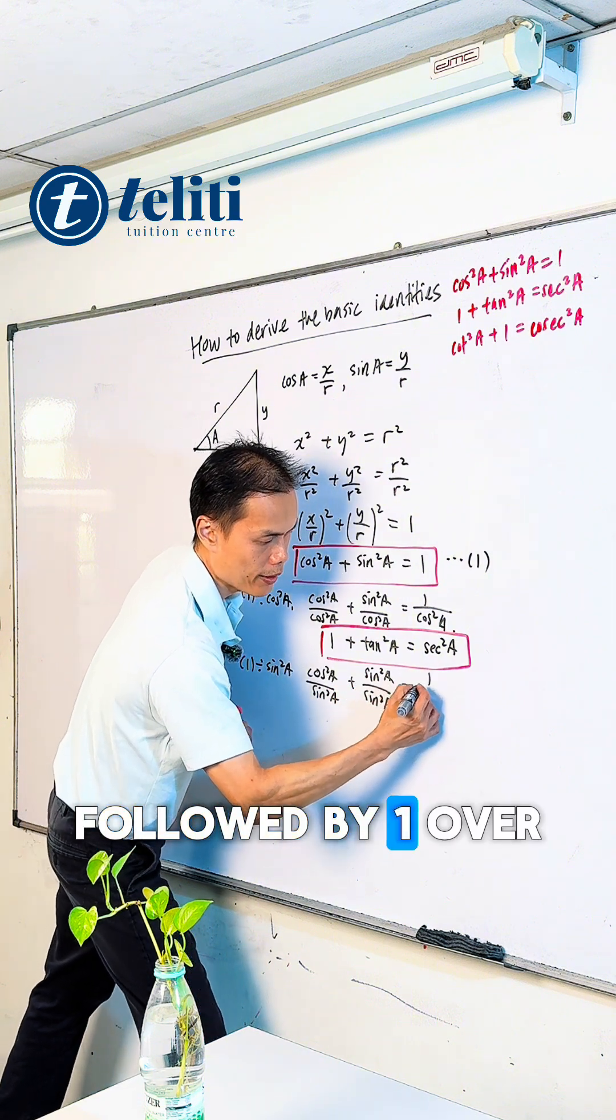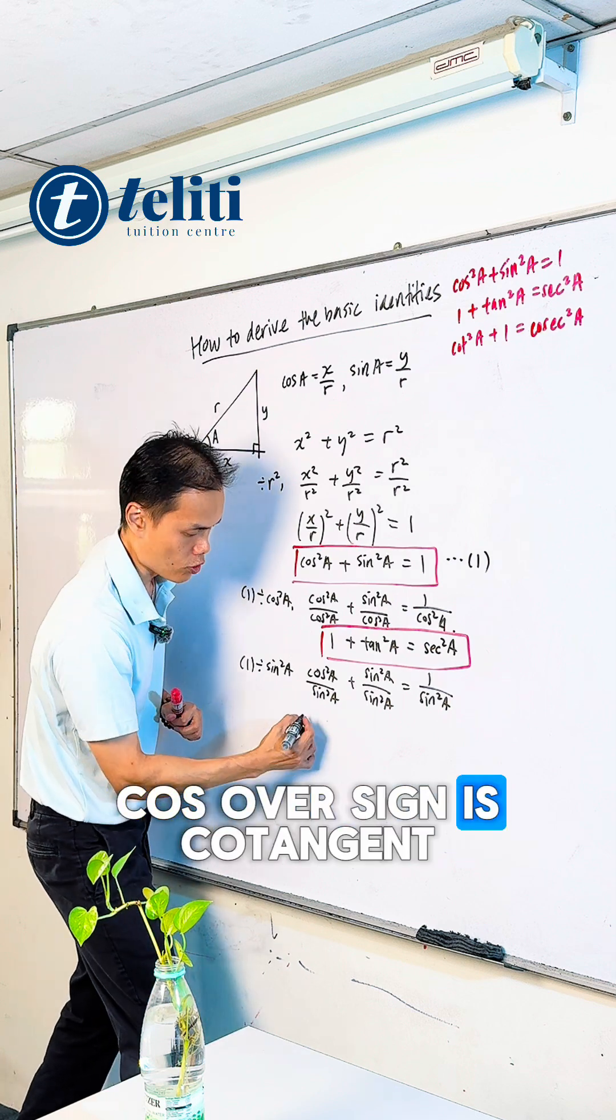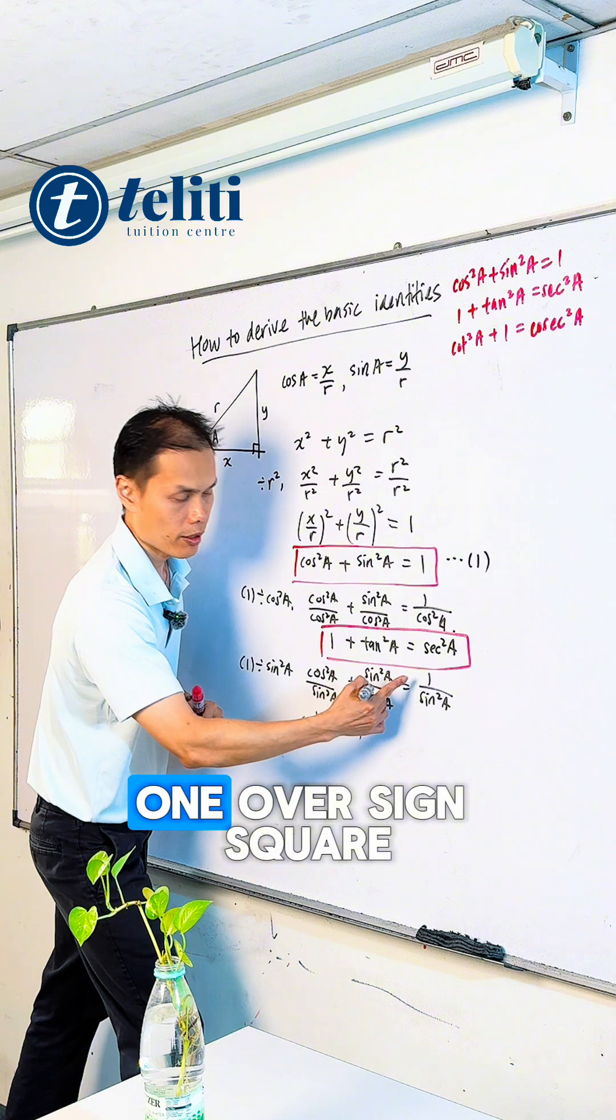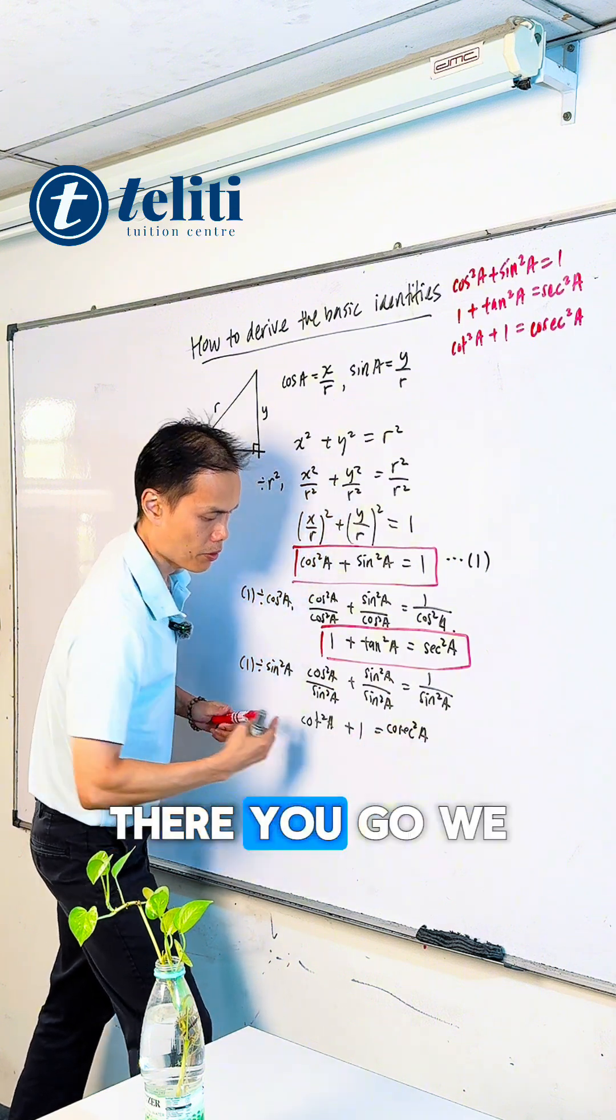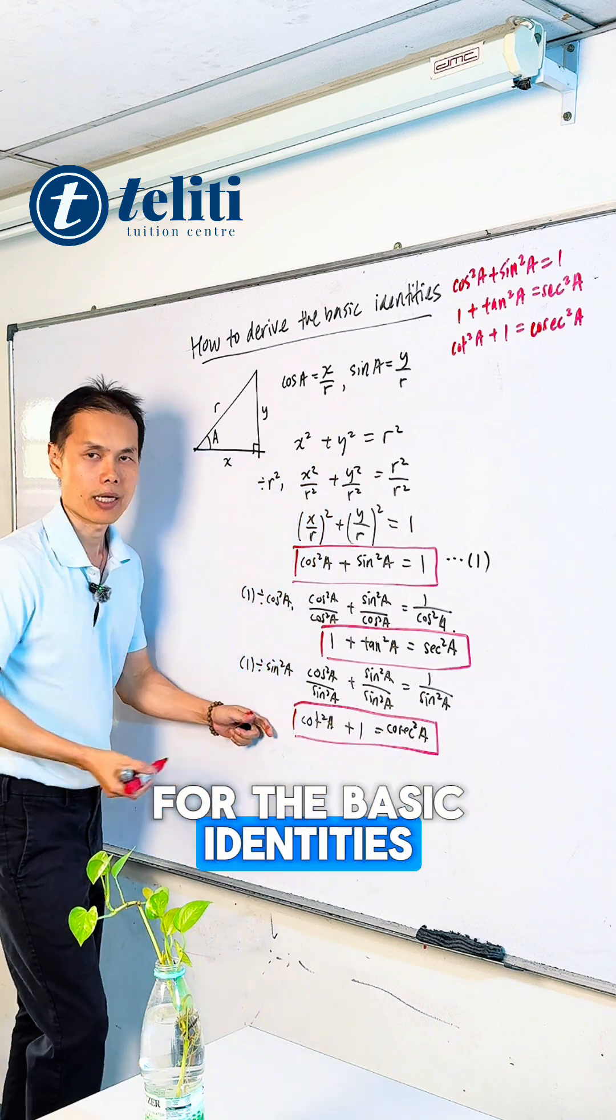Now we know that cos/sin is cotangent. Let's write this as cot²A. Sin² over sin² is 1, and 1 over sin² is csc²A. There you go, we got the third formula for the basic identities: cot²A + 1 = csc²A.